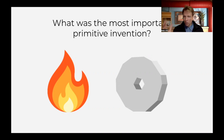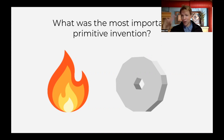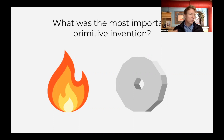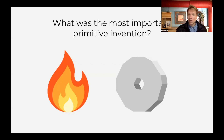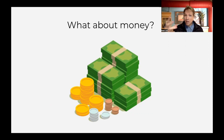Ask your students what they think are the most important inventions. You may get something like fire, you may get something like the wheel, copper weapons, a lever — let the conversation flow. Students may think it's this or that. You're going to make the case though: what about money? Money is an invention; it's not naturally occurring. Societies had to come up with this idea of money.